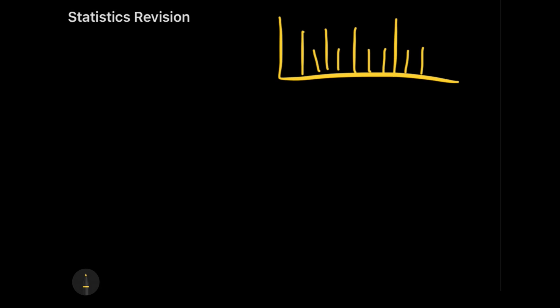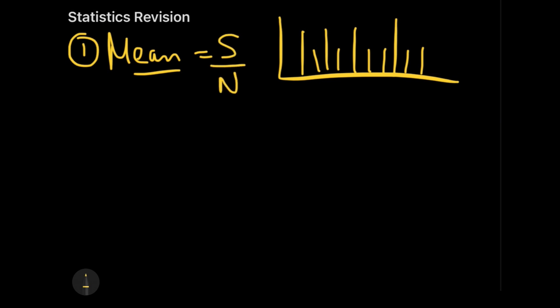This is a revision video, so I'll just tell you what is what. The word 'mean' itself means average. We calculate the average as the sum divided by the total number — so if the sum is 100 and there are 10 elements, the average or mean is 10. The definition of mode is the maximum repeated element: whichever number has the highest frequency in the data set is the mode.